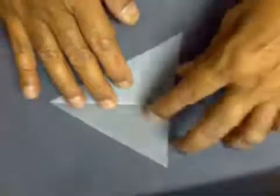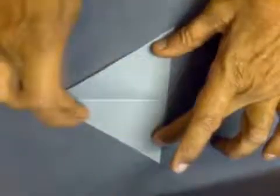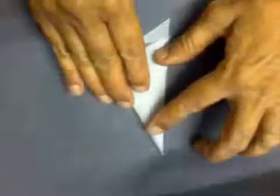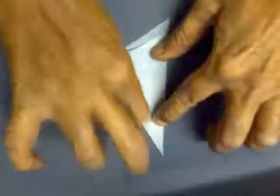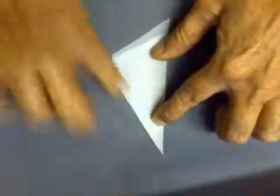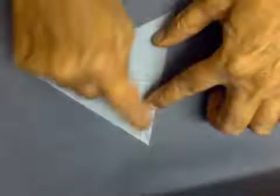Let us turn the triangle round and find the second angular bisector by bringing this edge and this edge together like this. Make a good crease there. When you open up, this is an angular bisector. These two angles will be equal.